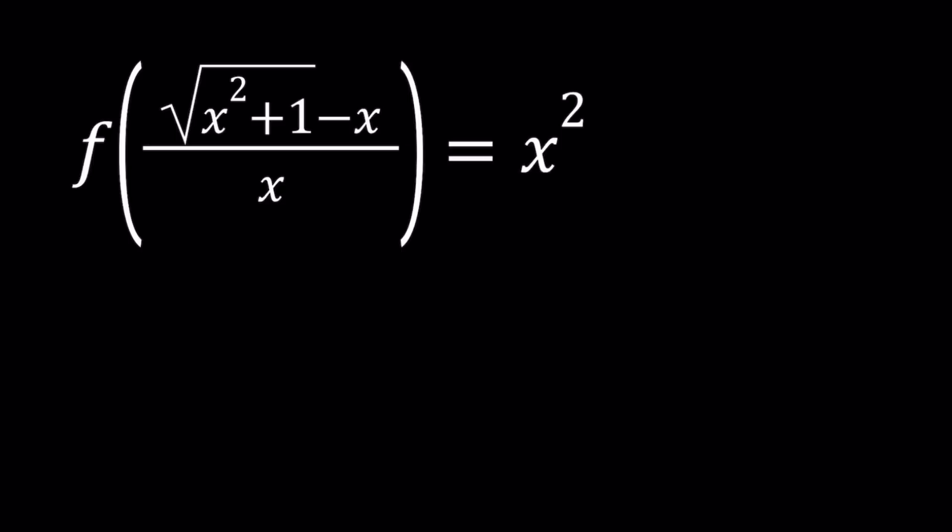There are kind of two types of functional equations in my opinion. The ones that have two variables or more variables in it, and the ones that are like this one. These are easier to solve because you don't really have to check a lot of things like what is f of 0, is the function continuous, is it bijective, and so on.